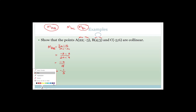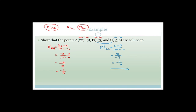Both gradients equal minus 1 over 3 - it doesn't matter whether you go BC or CB if all points are on the same straight line. Therefore we've proven that these three points are collinear because they've got the same gradient.